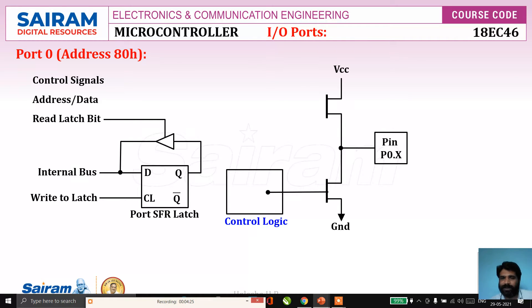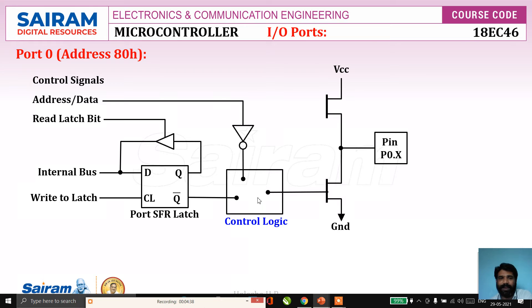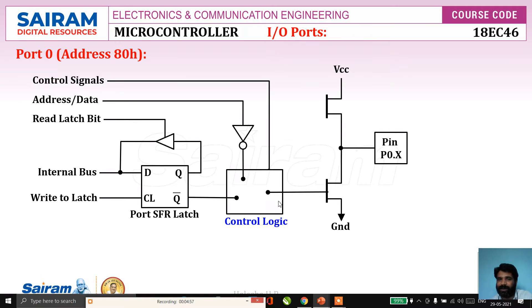The output of the control logic is connected to the gate pin of the lower FET, and the upper FET gate is controlled separately. The input to the control logic is the complemented output of the D-latch, along with the complement of the address/data pins and a control signal. This control signal decides whether the pin functions as an IO pin or as an address/data pin.